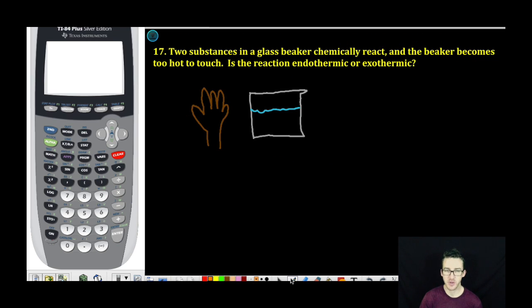Okay, as we look at number 17, it says two substances in a glass beaker chemically react and the beaker becomes too hot to touch. Is the reaction endothermic or exothermic? Again, let's think about this.